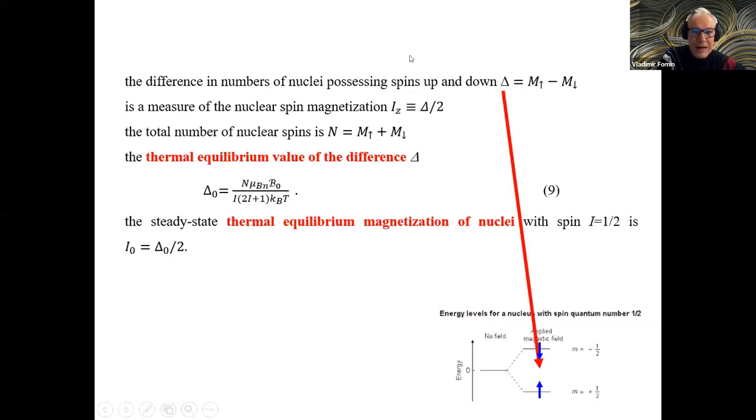The difference in numbers of nuclei possessing spin up and down is the measure of the nuclear spin magnetization, which is needed for our goal. The thermal equilibrium value of this difference can be again calculated like it was done for electron spins. So we know the thermal equilibrium magnetization of nuclei.